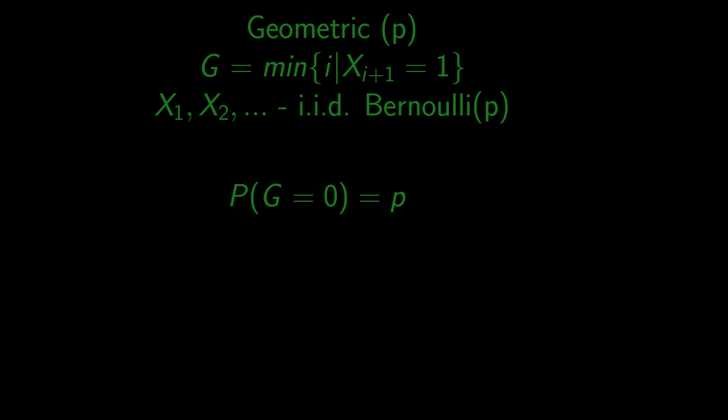For us to have one unsuccessful trial, two events need to happen together. That we don't succeed in the first trial, but we do in the second.